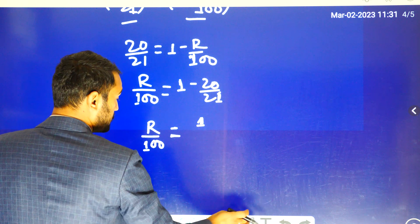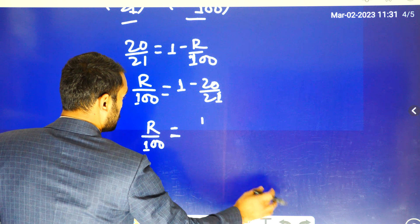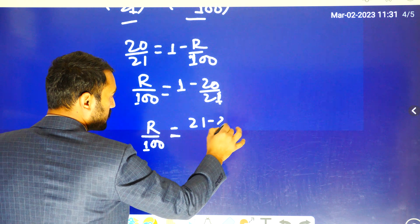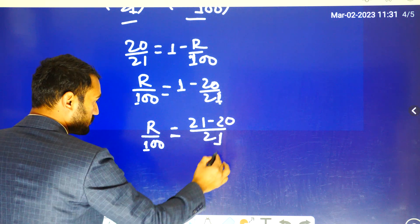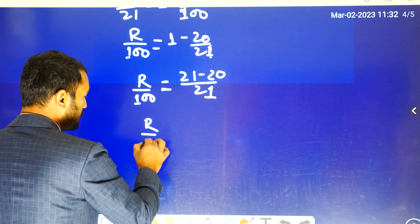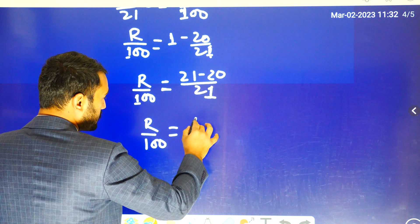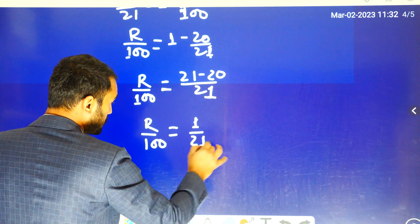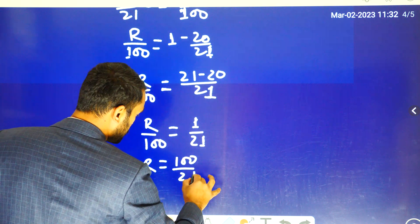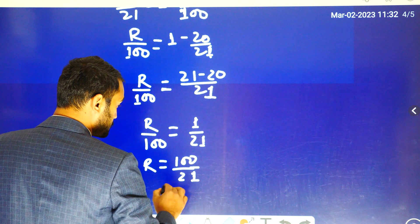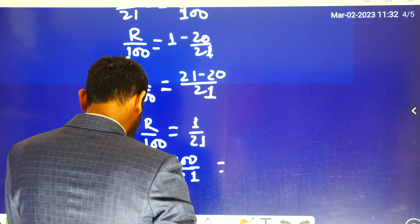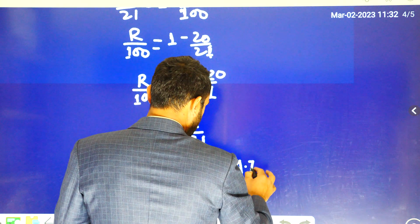Now R by 100 equals 21 minus 20, so R by 100 equals 1 divided by 21. If we multiply, then R equals 100 divided by 21, which is approximately 4.76 percent.